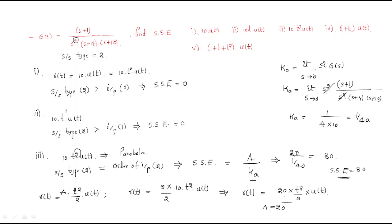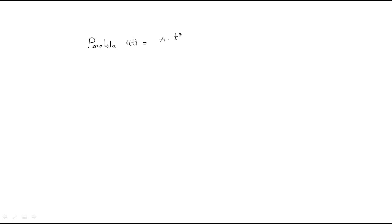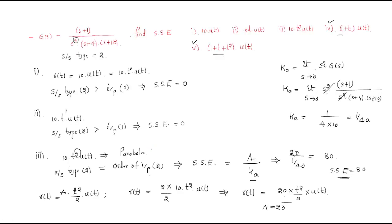So the steady-state error equals 800. One important concept to remember: the parabola input must always be in the form a·t²/2·u(t). If the given input is not in this form, convert it first before applying the steady-state error formula. These are the different models for steady-state error analysis.